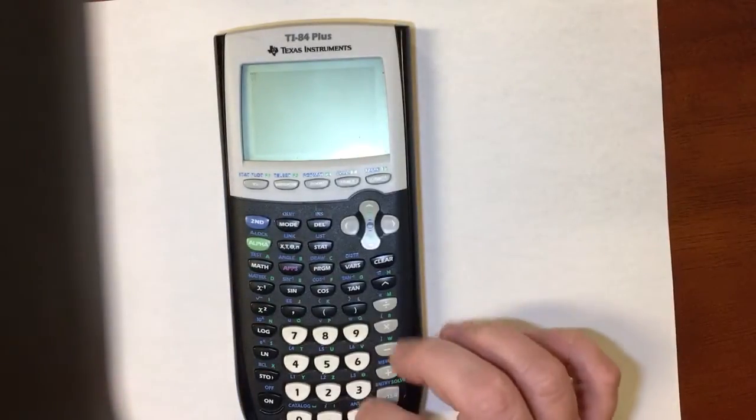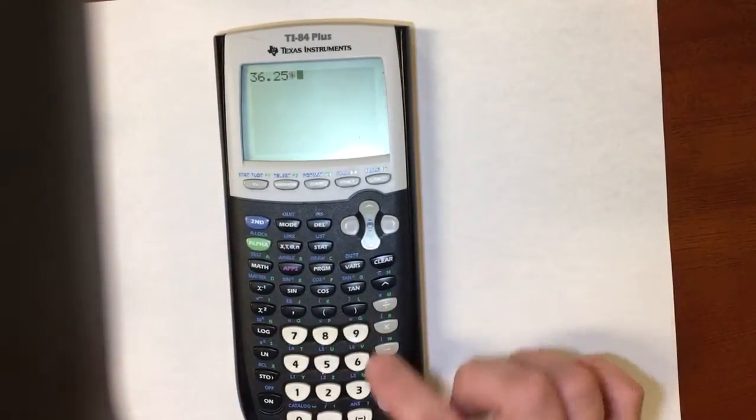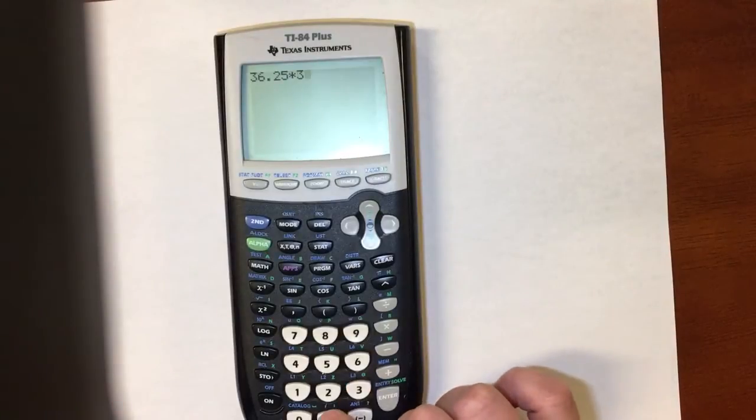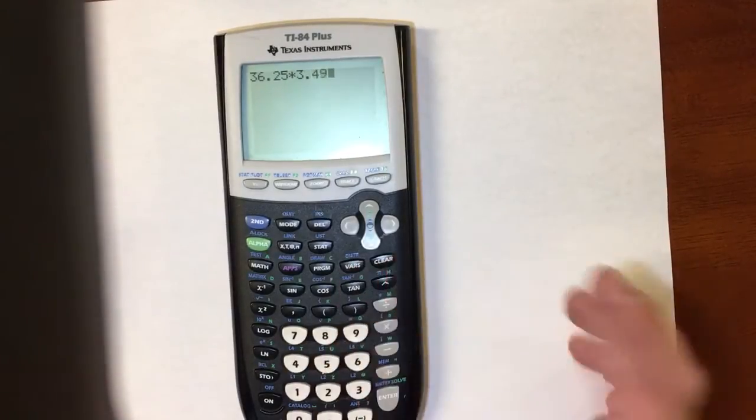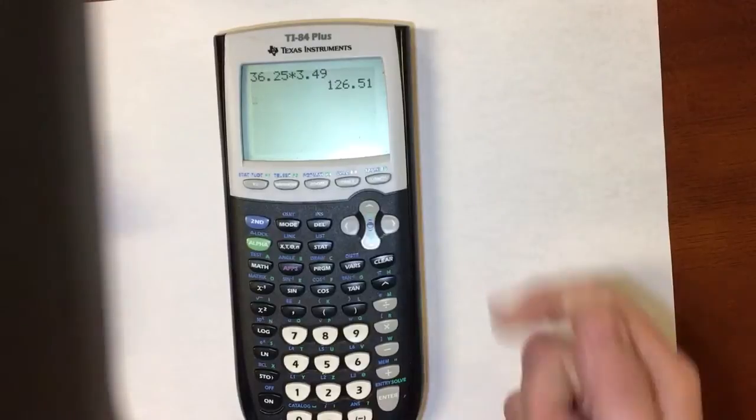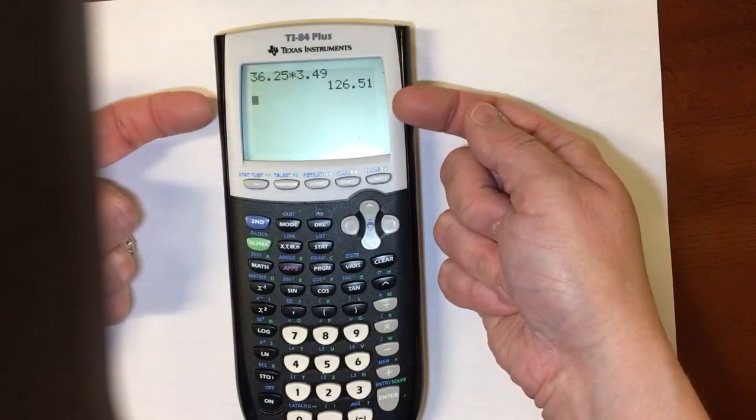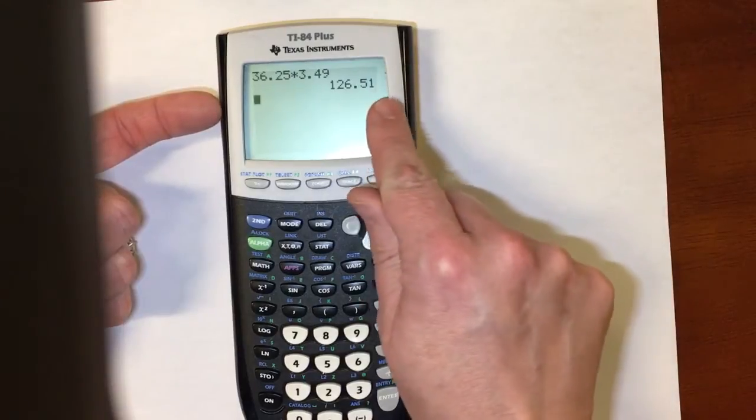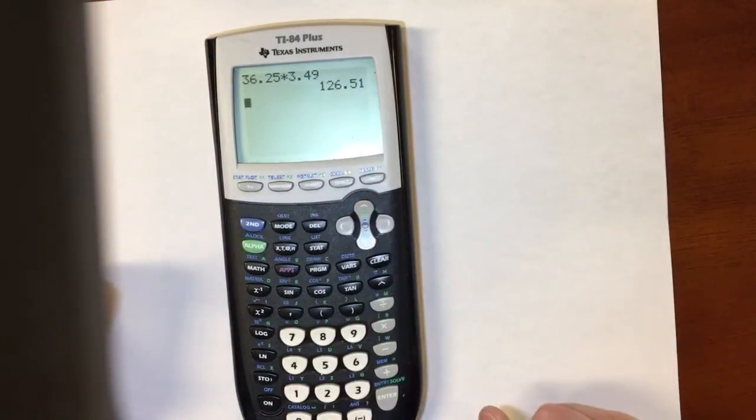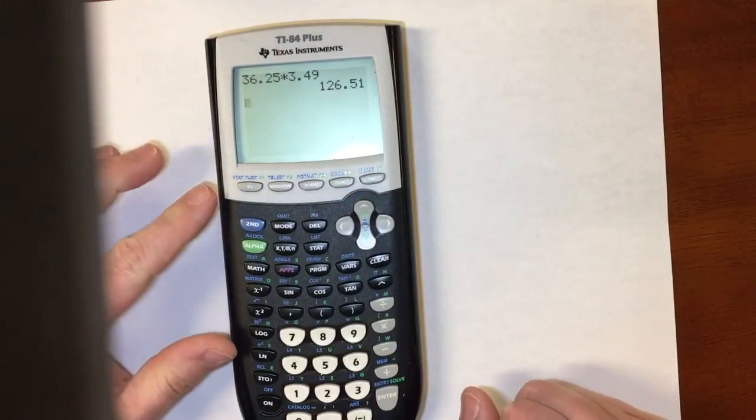And let's say I want to multiply 36.25 times 3.49. Okay, so when I do this with the decimal floated to two decimal places, it's automatically going to make it be two decimal places.